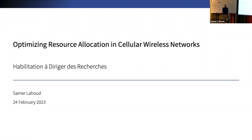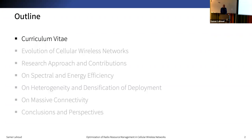Mr. President of the jury, members of the jury, my presentation today is entitled Optimizing Resource Allocation in Cellular Wireless Networks. I will start by briefly presenting my CV, then I will state the main elements that illustrate the evolution of cellular wireless networks. I will give an overview of my research approach and focus on three main contributions. Finally, I will present some promising perspectives that stem from our research works.